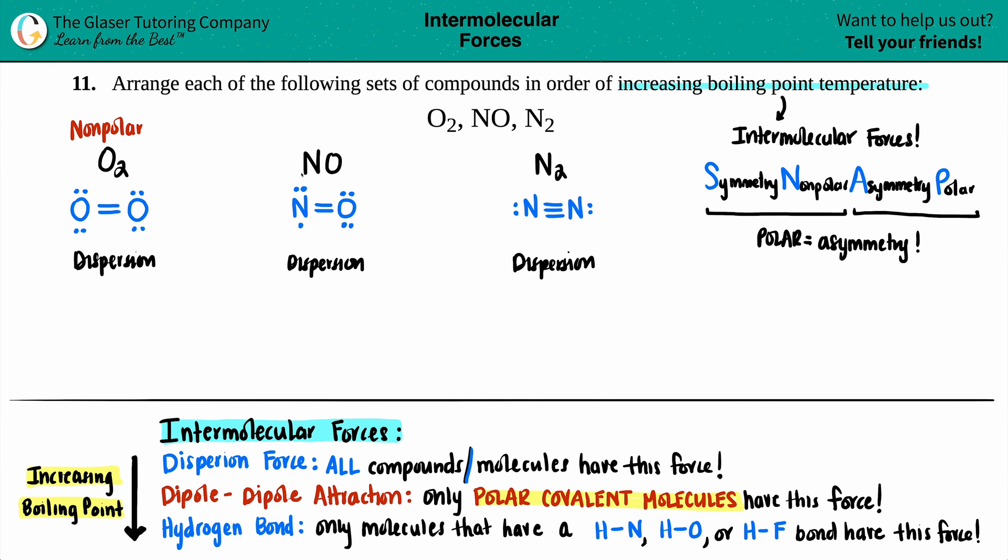But if I look at NO and I break this down the middle, I got a nitrogen on the left and an oxygen on the right. Those are two different elements. That's asymmetrical. It is not the same. So since this is classified as a polar molecule, you can add dipole-dipole attraction to the list.